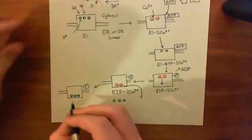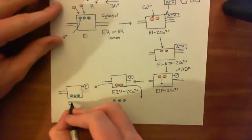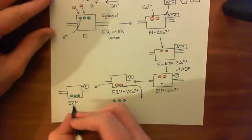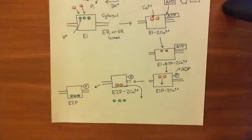So it's in the E2 conformation with a phosphate group attached to it, but the three protons don't get named. Whoever came up with this naming system didn't care about the protons.